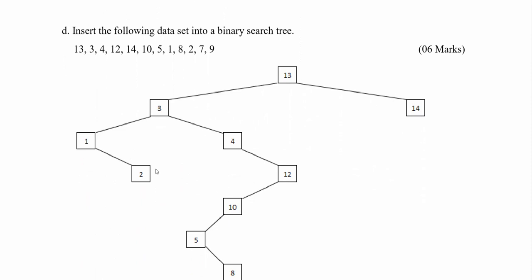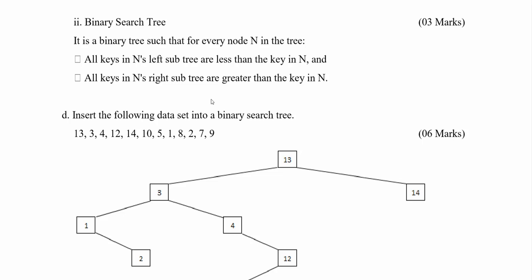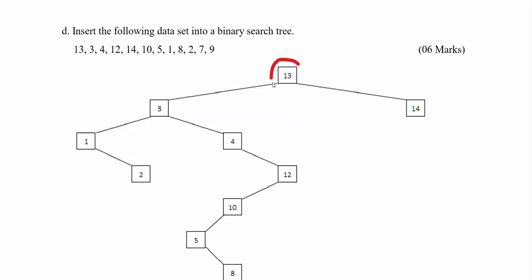Part D: insert the following data set into a binary search tree. The numbers are 13, 3, 4, 12, 14, 10, 5, 1, 8, 2, 7, and 9. When inserting, you must consider the conditions for a binary search tree. We start with number 13 — the first number becomes the root. The second value is 3; when we compare with 13, three is less than 13, therefore it goes to the left-hand side. Our next number is 4; we pass it from the root, which is 13.